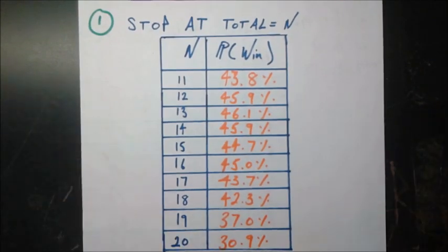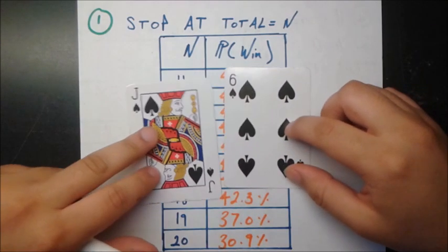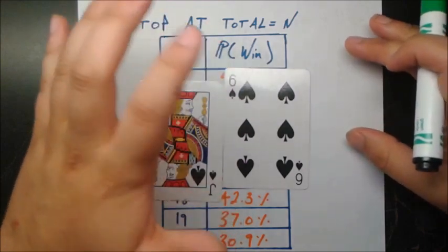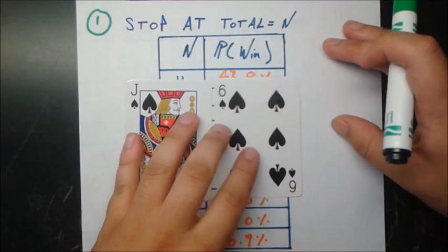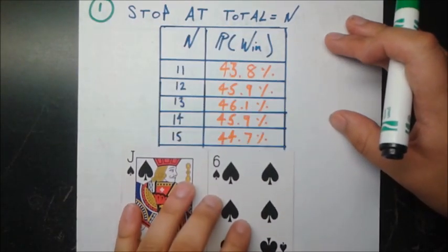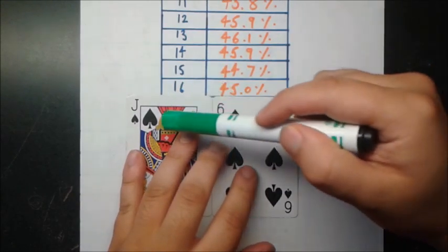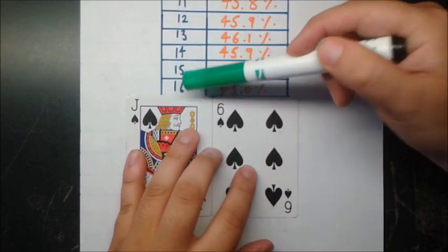So now let's look at this strategy. This is a very simple strategy. You're going to initially be dealt two cards. For example, let's say you're dealt this 10 and this 6, so you have 16. You're going to stop when your total is equal to some n. Now, this n is the variable factor here. If you have any n from 11 to 16 in this case, then you would be done because you have exceeded or equal to that number.